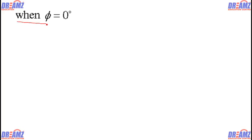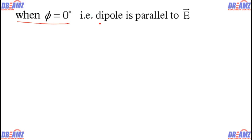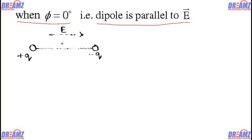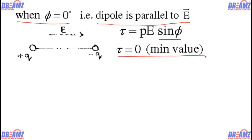Now, if we consider phi equal to 0 — that means the intensity and the dipole moment are in the same direction, so the dipole is parallel to the electric field. If the dipole is placed parallel to the electric field, phi is 0 degrees, and since sine 0 equals 0, the torque tau equals pE sine 0 equals 0. That is the minimum value of the torque.